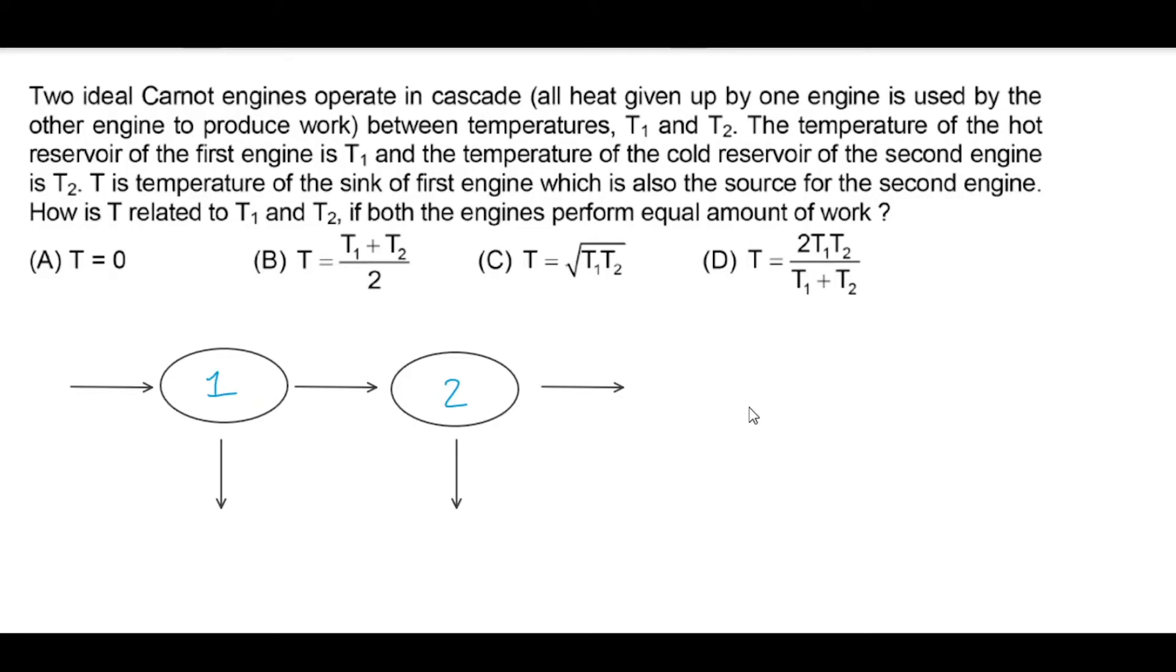This question is from J.E. Main 2027, January, 2nd paper. Two ideal Carnot engines operate in a cascade, all heat given up by one engine is used by the other engine to produce work between temperatures T1 and T2.